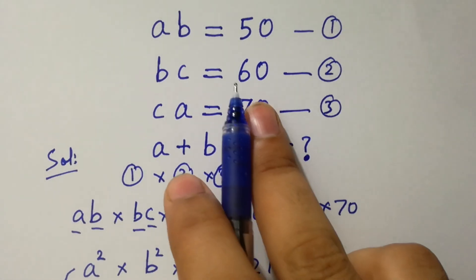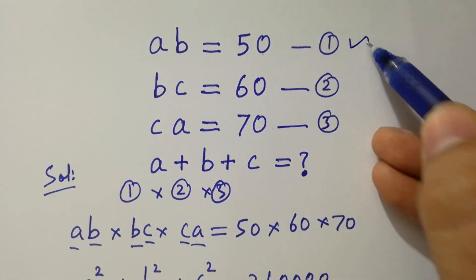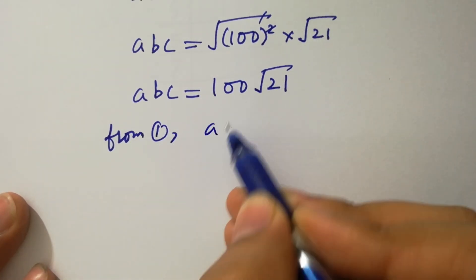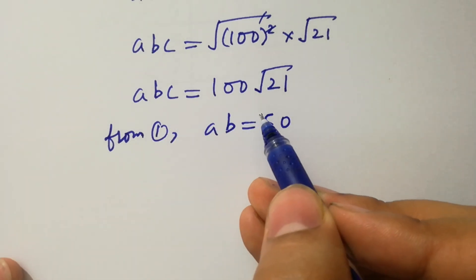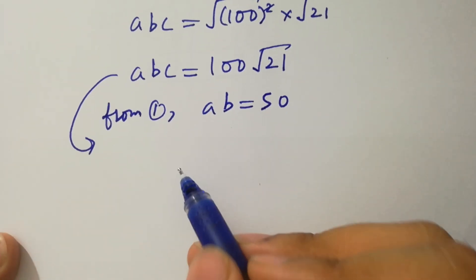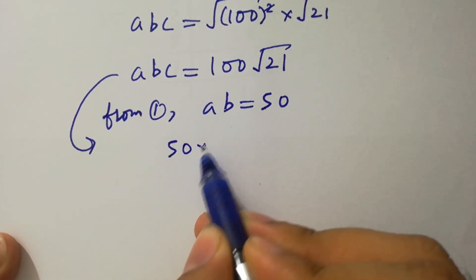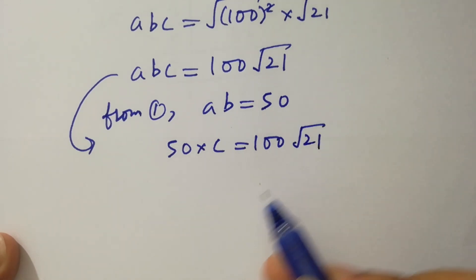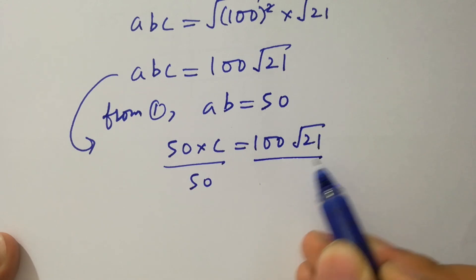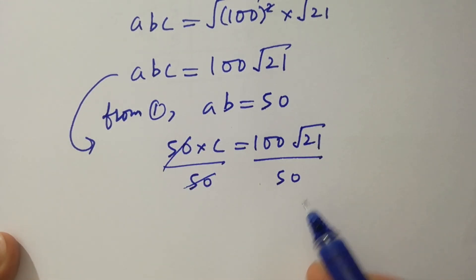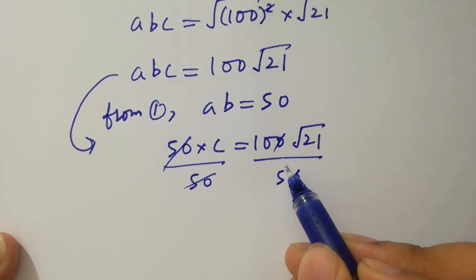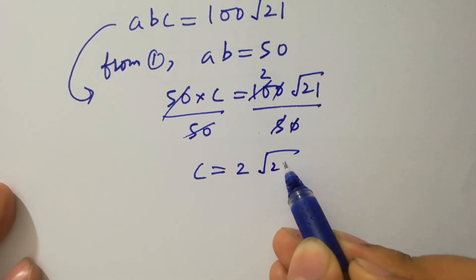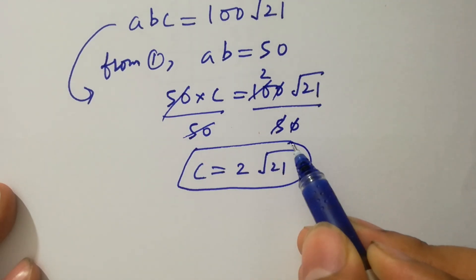From the first equation, ab equals 50. Since abc equals 100√21, we have 50 times c equals 100√21. To find c, divide both sides by 50. The 50s cancel, giving c equals 2√21.